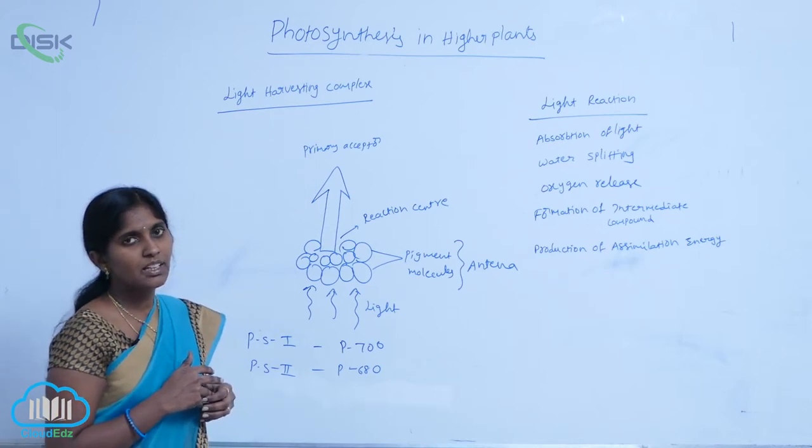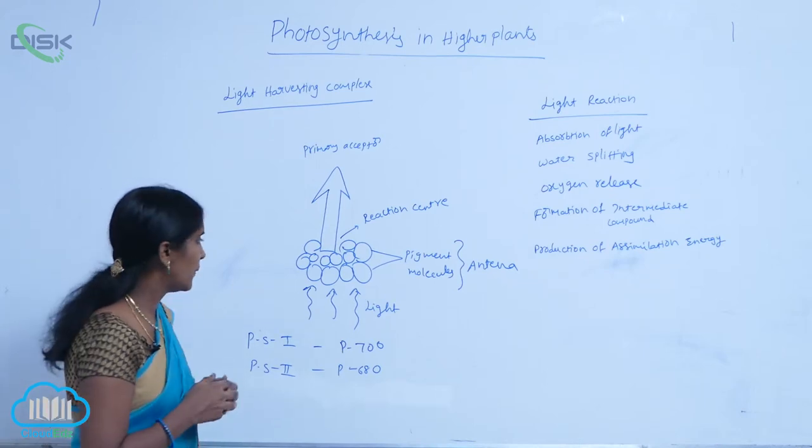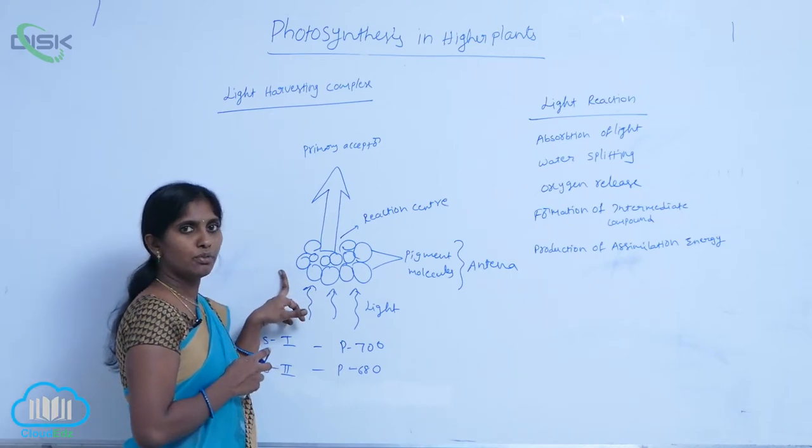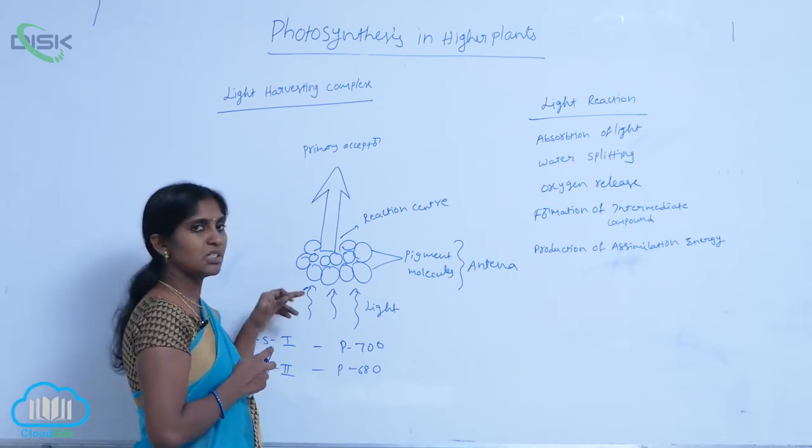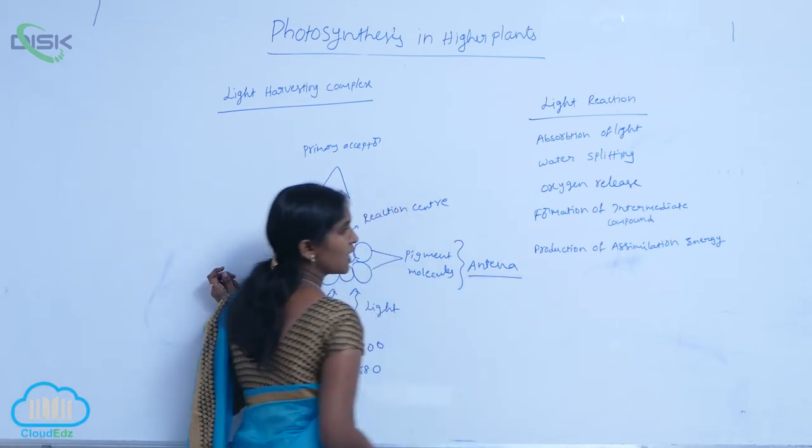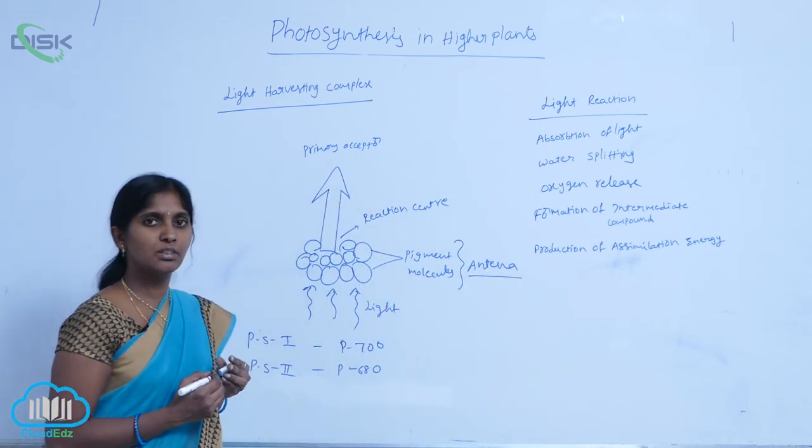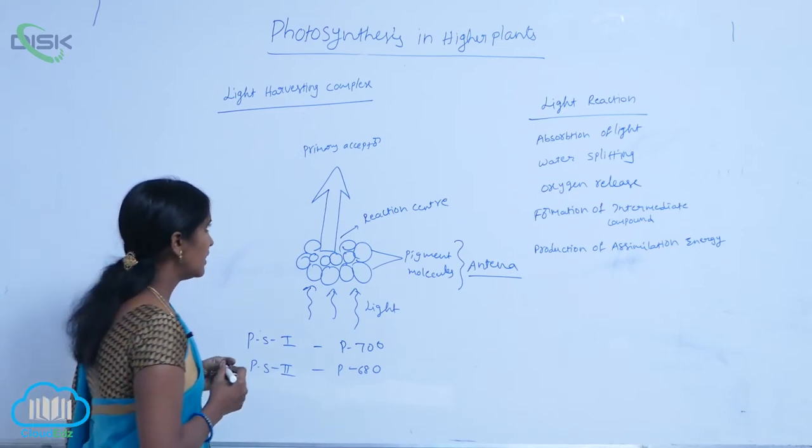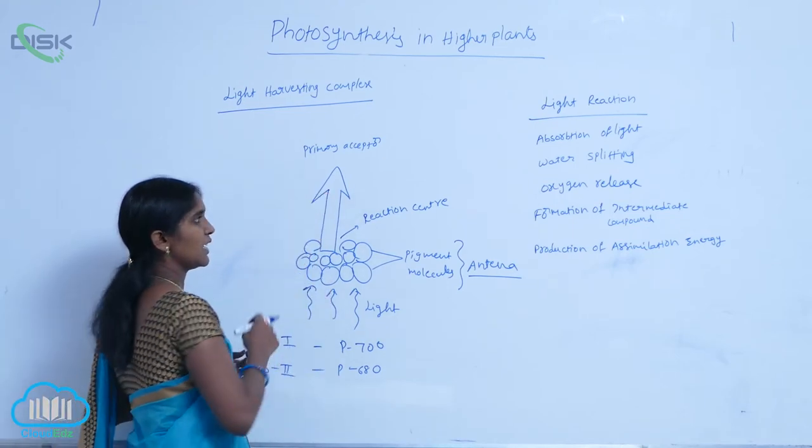The light harvesting complex is formed by hundreds of pigments with proteins. Here it is formed as an antenna. The antenna absorbs the light then gives it to the reaction center.